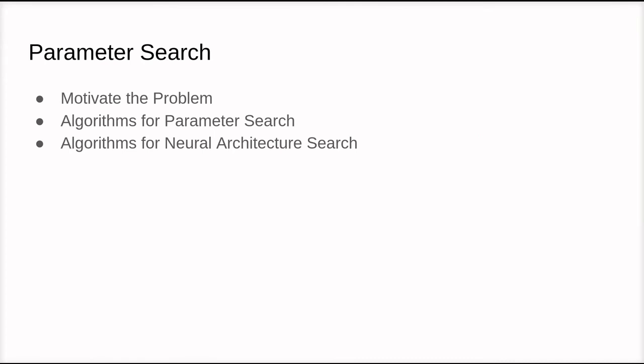We're going to break this lecture up into three videos. The first one will motivate the problem. The second one will cover algorithms for parameter search, which is trying to find good parameters for neural networks that aren't the weights. And then we'll take a step up a level and optimize the architecture for the neural network that we're trying to train to do some task.